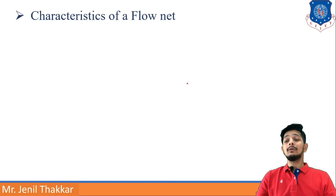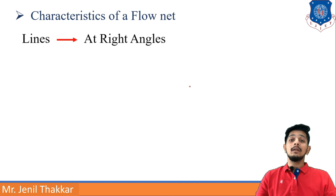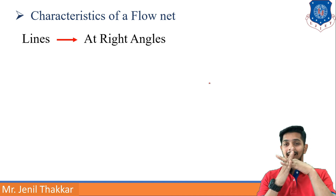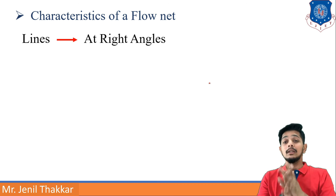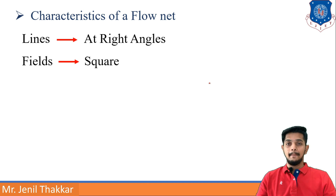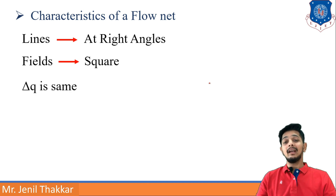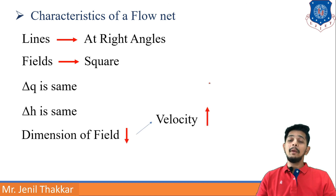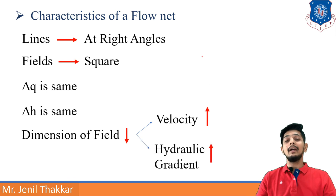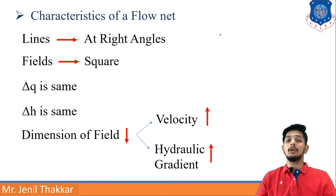The characteristics of a flow net are: flow lines and equipotential lines meet at right angles, whether they are curved or straight. The fields formed are square. ΔQ is the same for every flow channel, and ΔH is the same between every pair of equipotential lines. If the dimensions of a field are smaller, the velocity and hydraulic gradient will be higher.